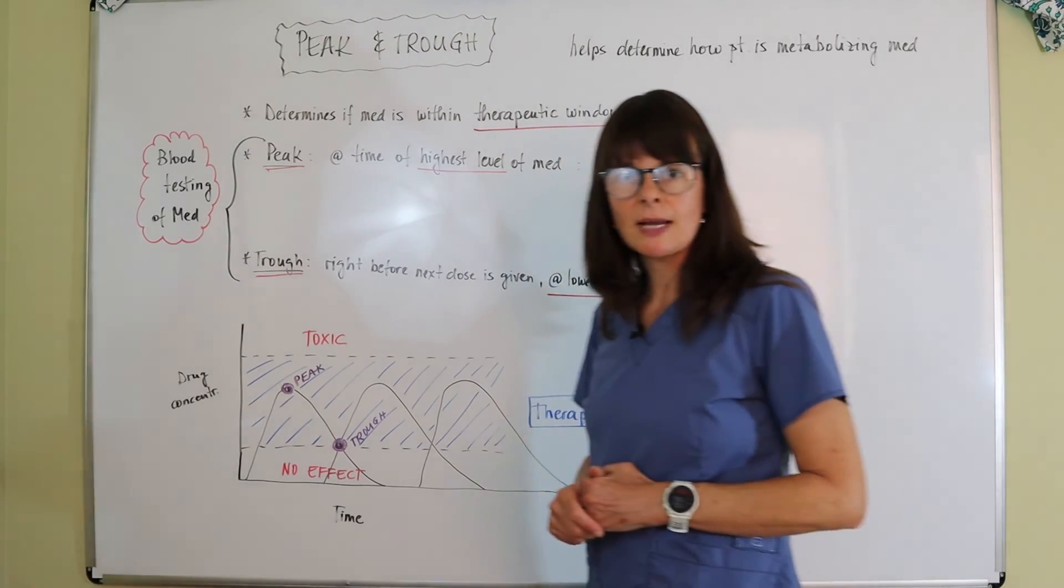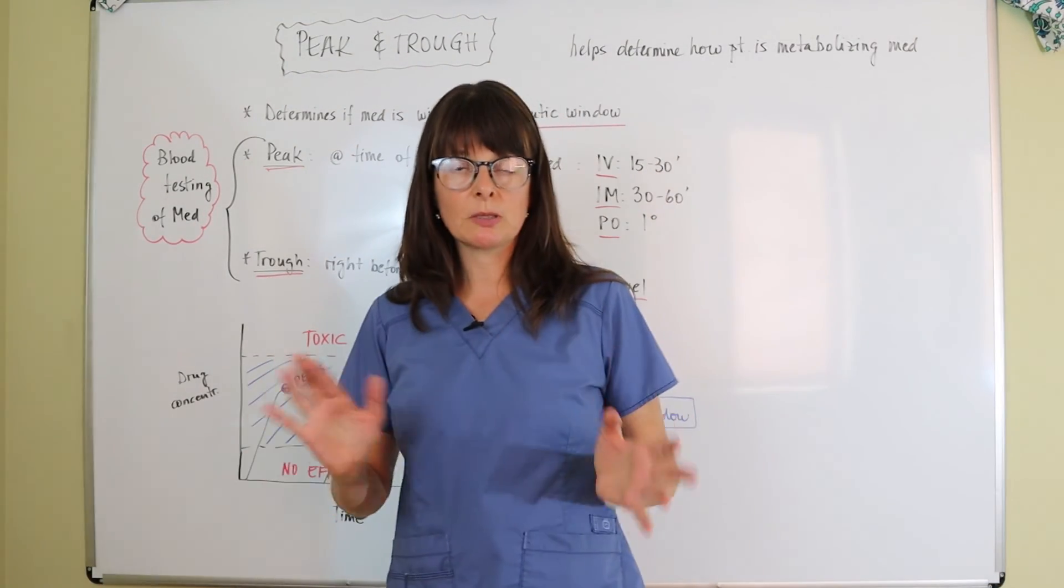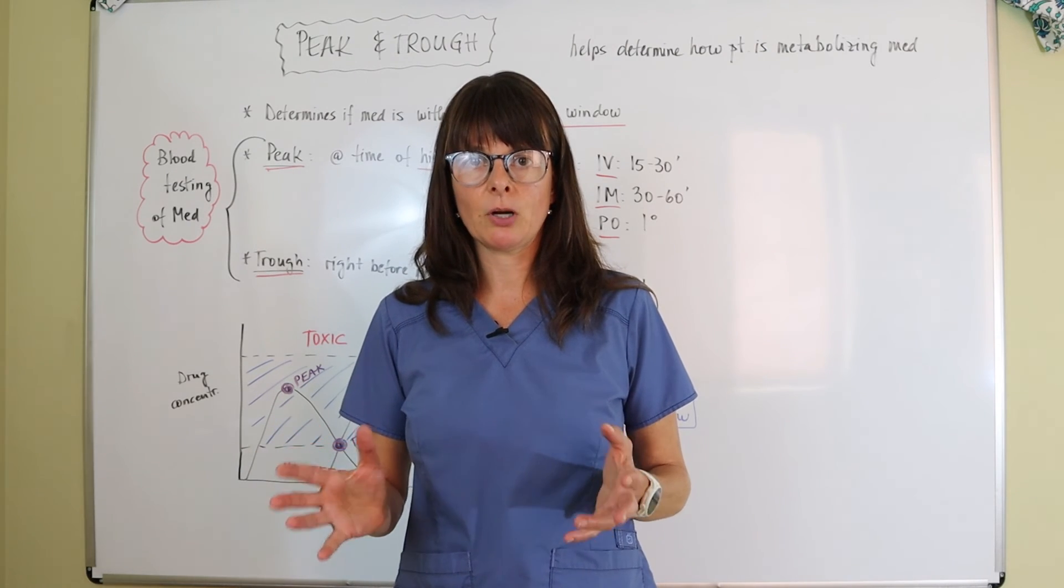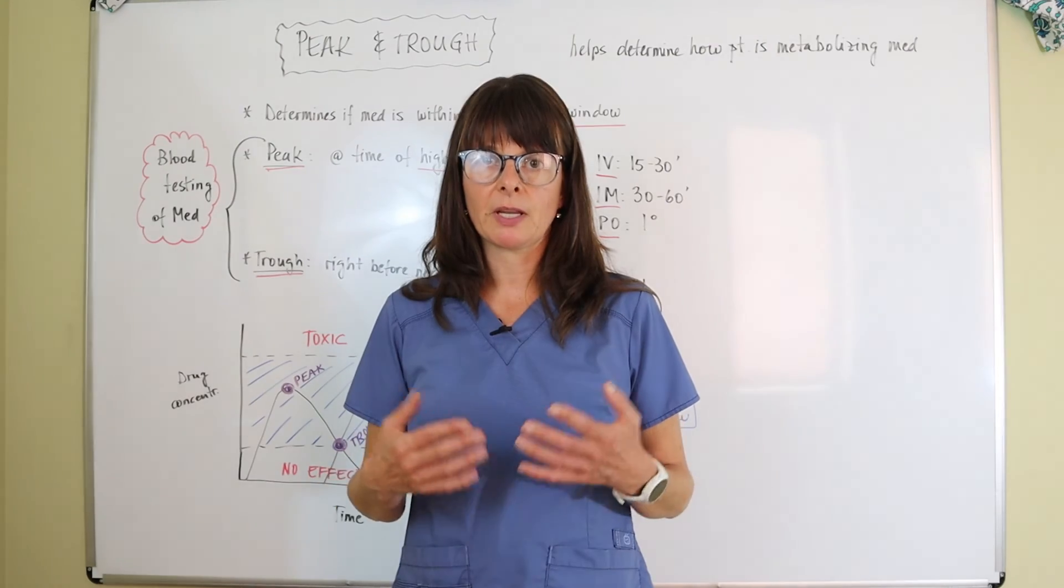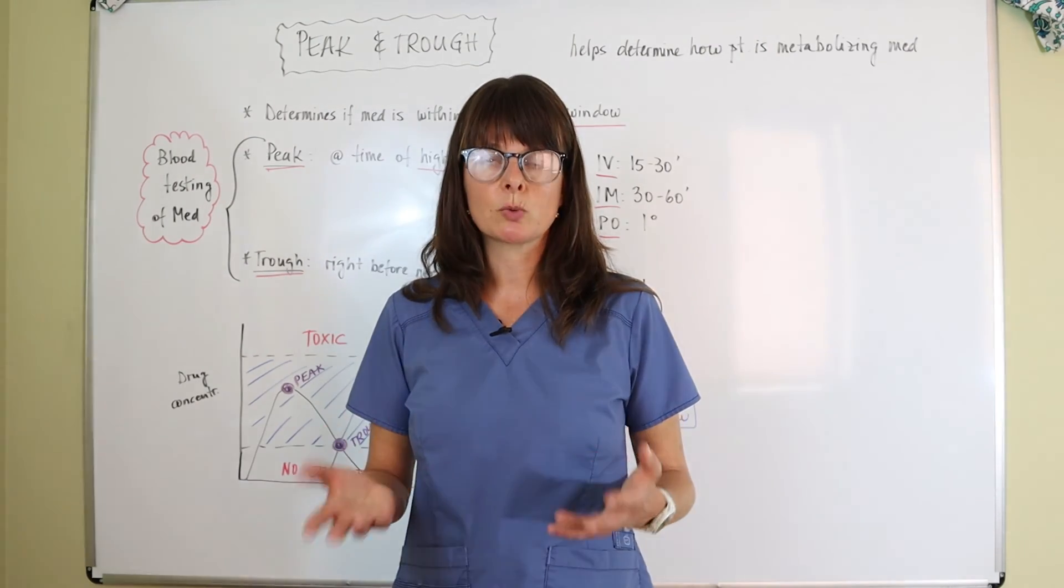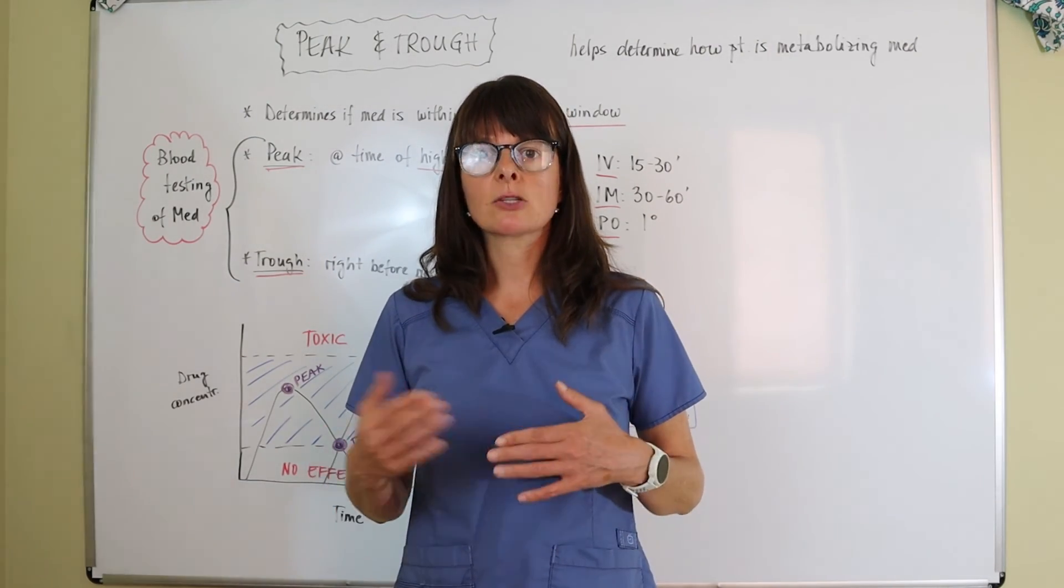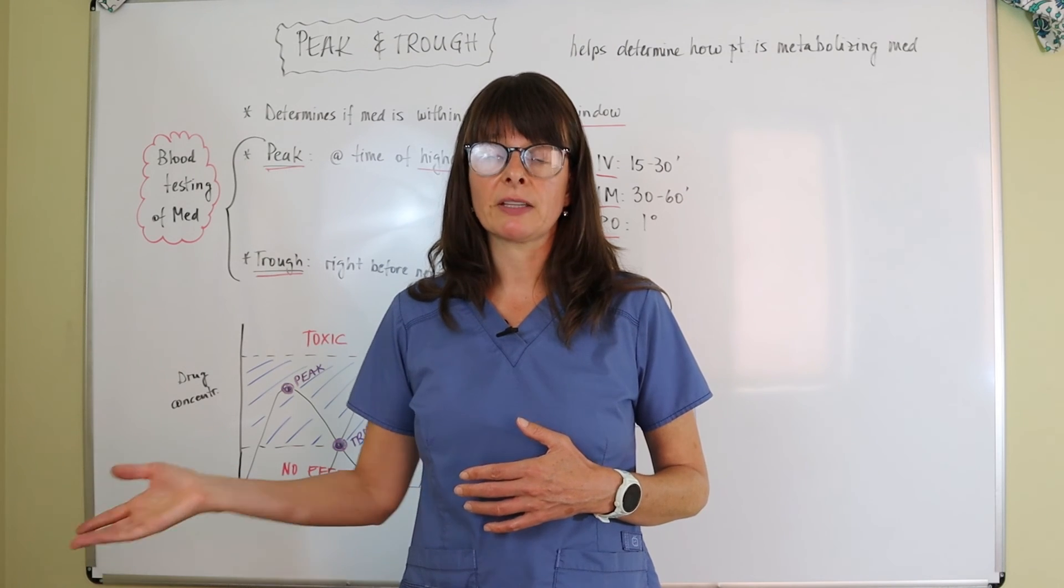So hopefully this helps you distinguish between peak and trough and help you understand that a little bit better. And know that we mostly use this for antibiotics that can be nephrotoxic because we always worry about the patient's kidneys and how certain medications could affect their kidney function.